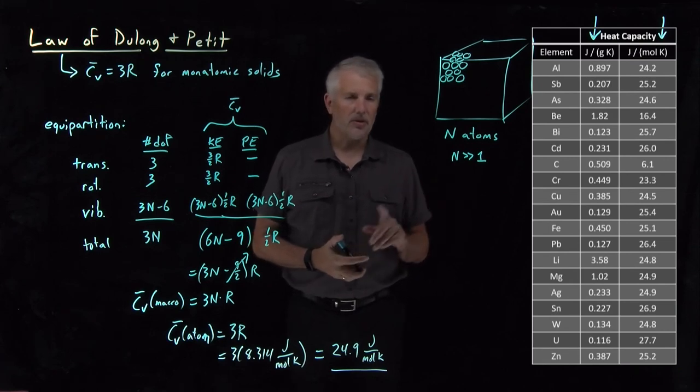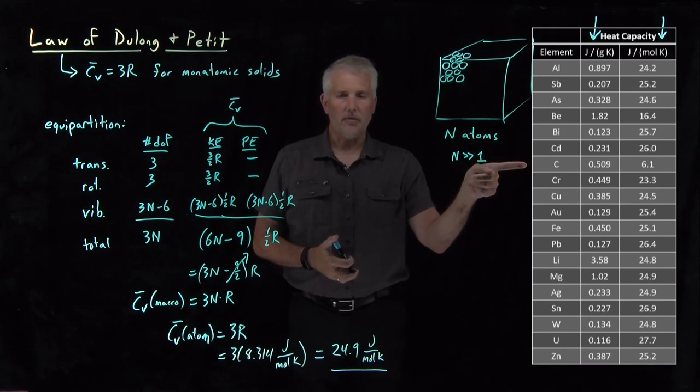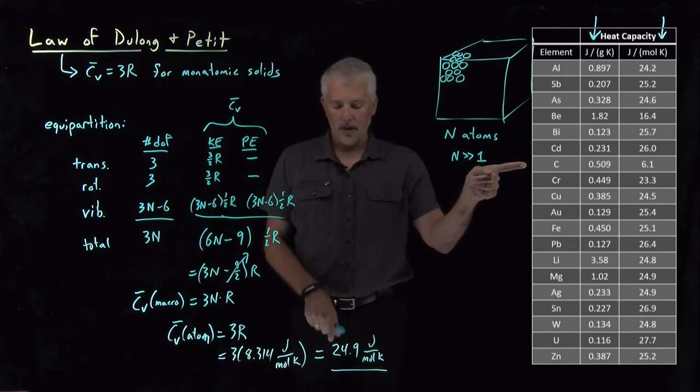Now is the time though to look a little more closely and say that, for example, carbon doesn't follow the law of Dulong and Petit. The heat capacity of carbon is 6.1 joules per mole Kelvin. That's pretty far from 24.9.